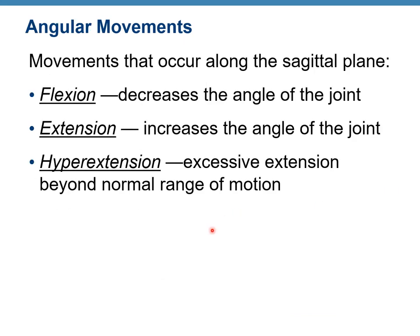Angular movements — flexion, extension, and hyperextension — occur along the sagittal plane. Flexion decreases the angle between two bones, or the angle of the joint. Extension increases the angle between bones. Hyperextension is excessive extension beyond the normal range of movement, or beyond anatomical position.